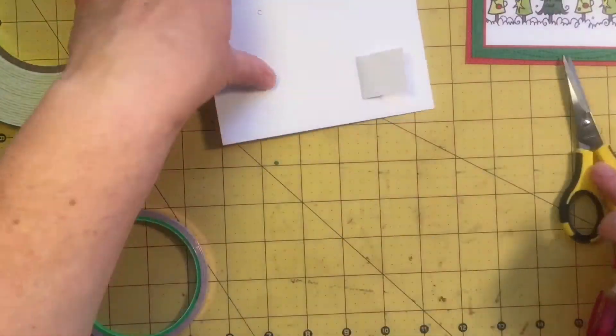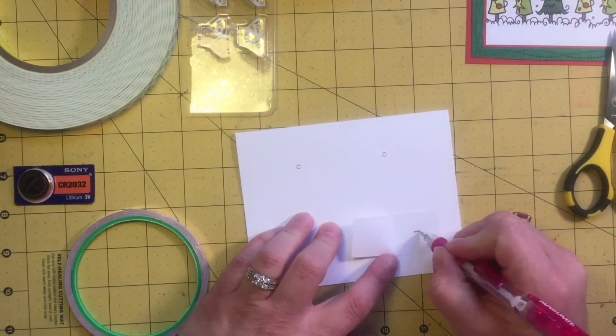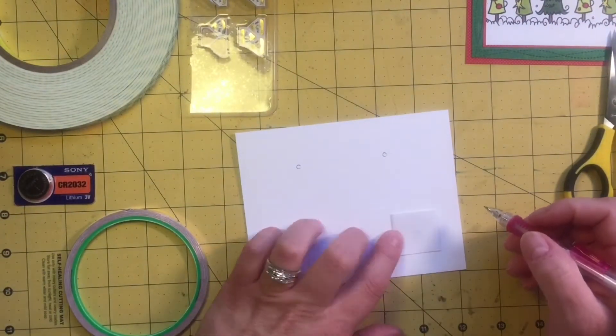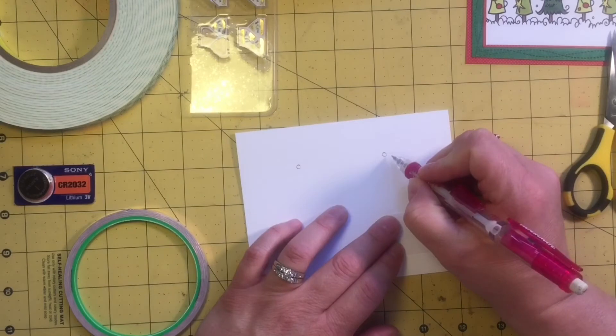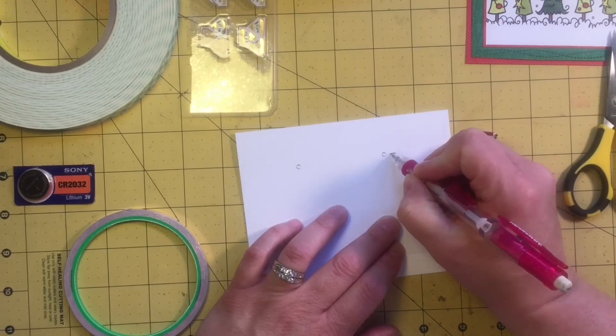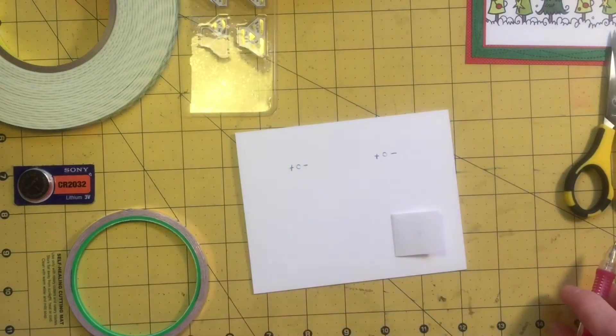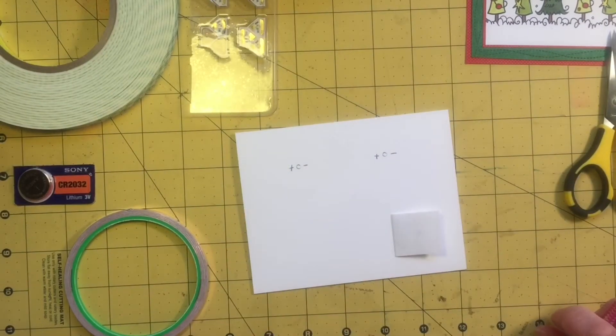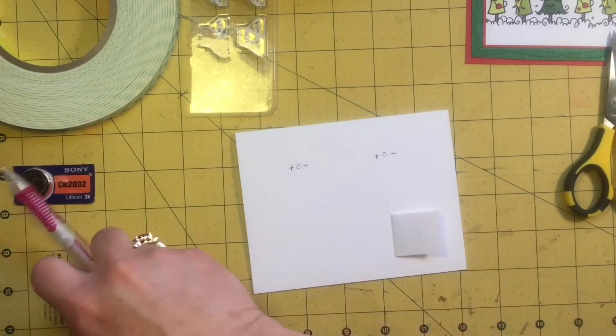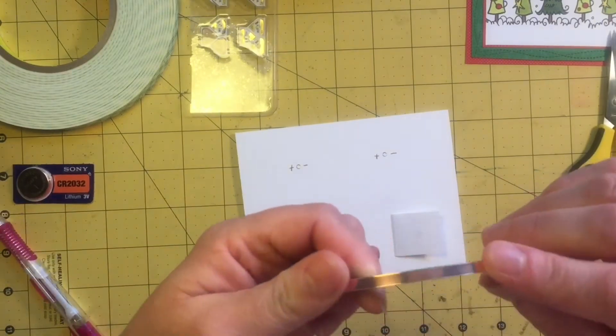Alright, now with this you need to have two paths, a negative path and a positive path. The batteries have negative and positive sides. So I always do the same. I do the negative path on the bottom part of the housing and the positive on the top part. And each side of the light needs to have a negative and a positive.